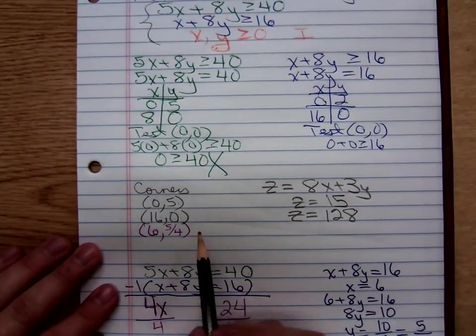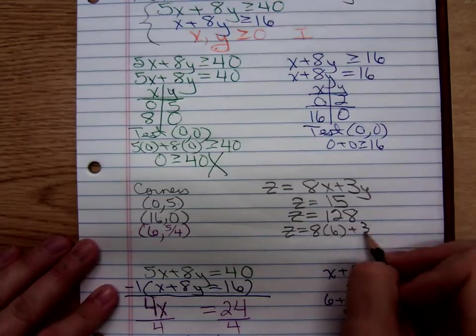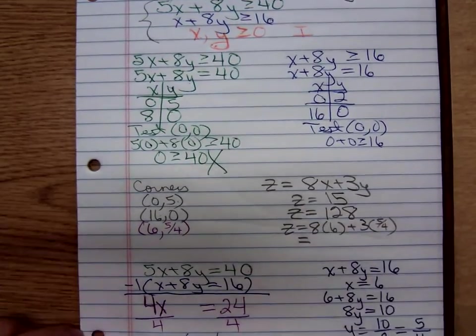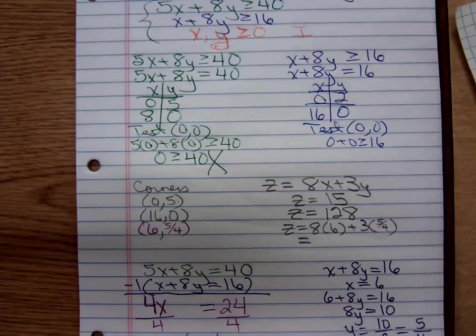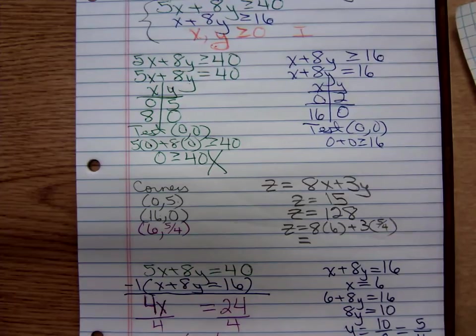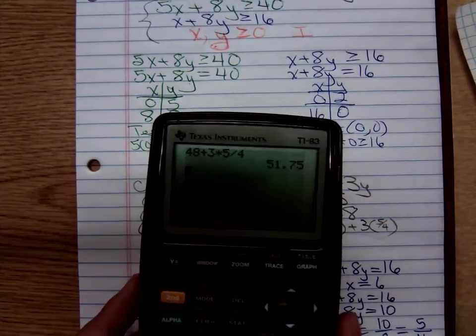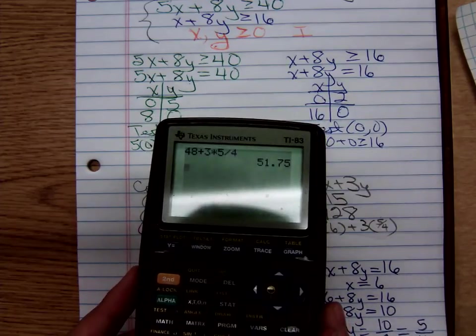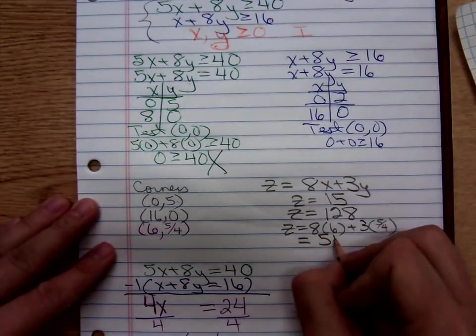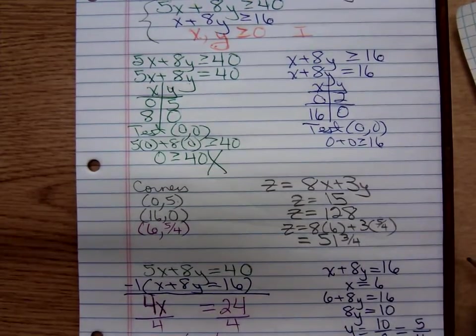And finally, plug in the 6, 5 fourths. That's 8 times 6 plus 3 times 5 fourths. I don't even have a calculator here. I'm getting 51 and 3 fourths. Someone check me there. I don't know if y'all can see my display or not. There. No matter what, it seems like there's a bad glare. But I'm getting 51 and 3 fourths, 51.75.